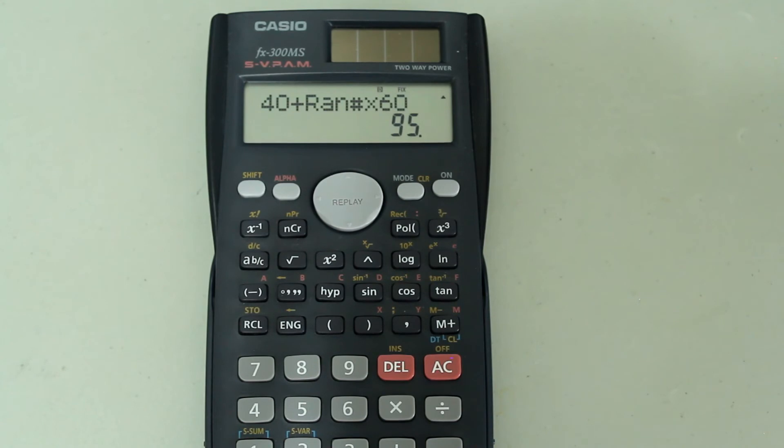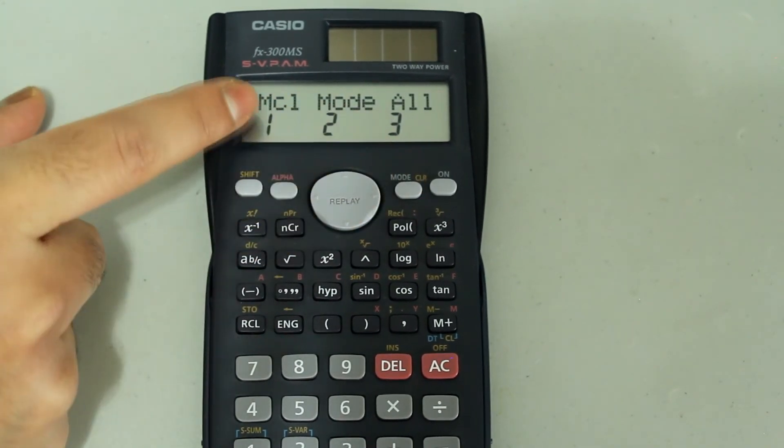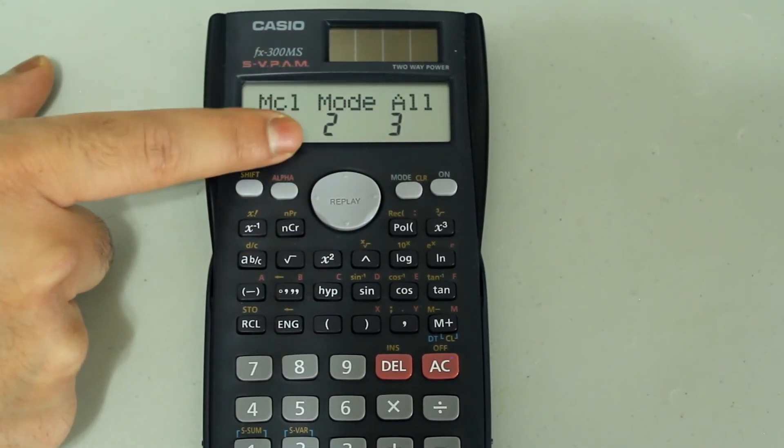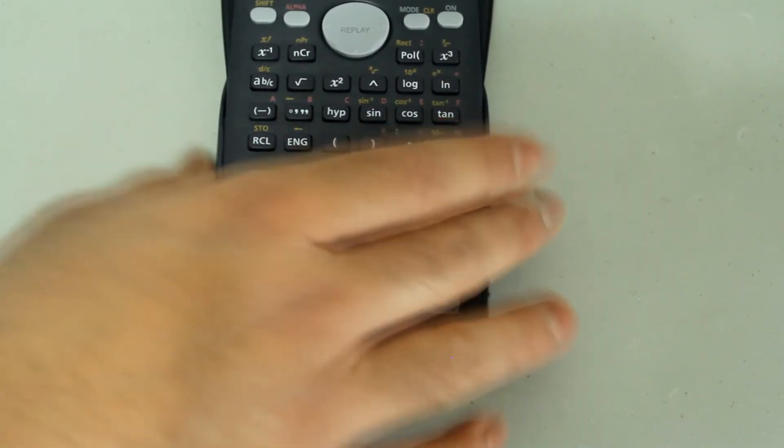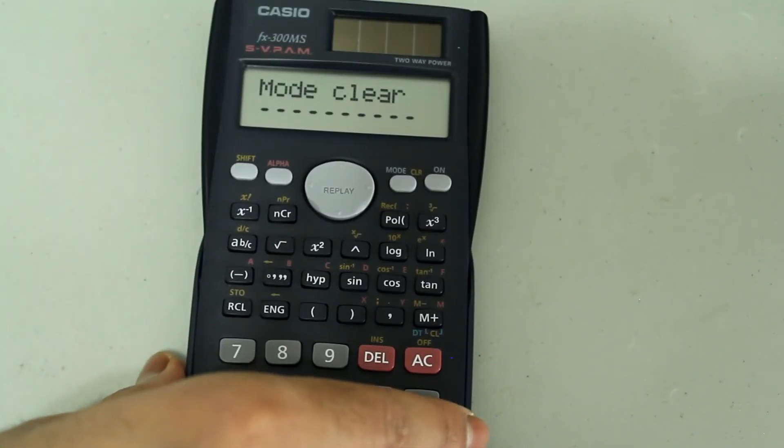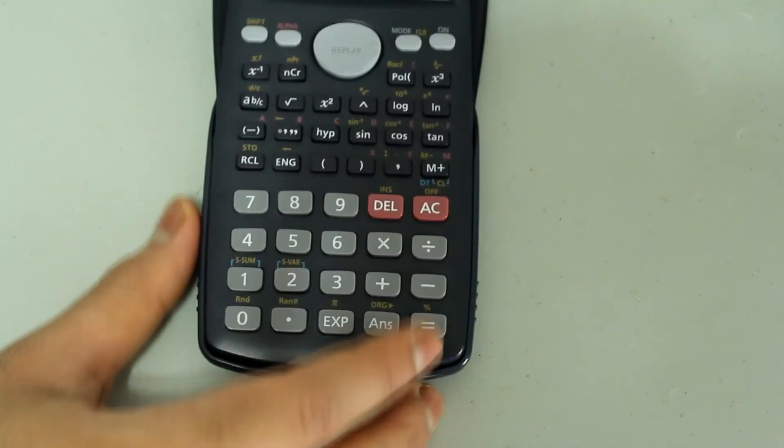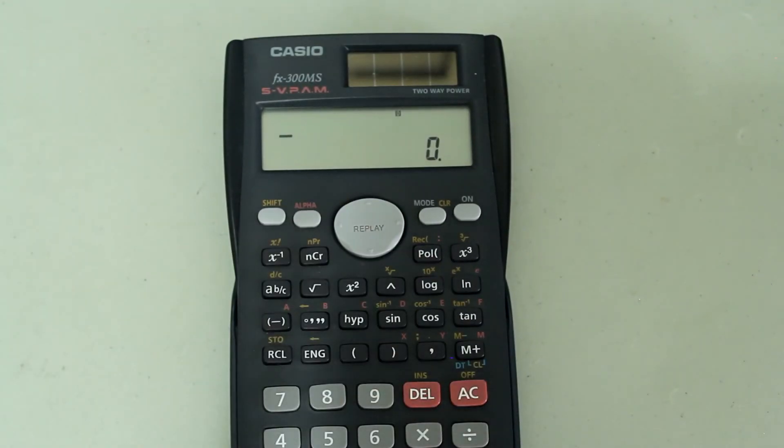Remember that we fixed the calculator to zero decimal places. If you want to change this back to the default, simply press shift and the mode button. Then select mode by pressing two on the number pad. This screen comes up. Press equals. This screen comes up. Press equals one more time. Now the fix option is turned off and all the modes are reset back to the default settings.